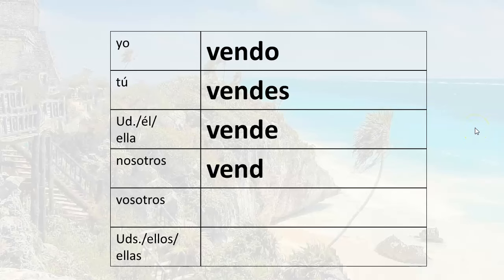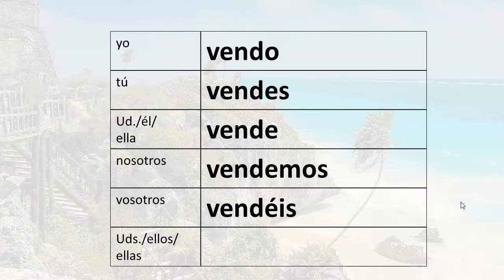We sell or we are selling: nosotros vendemos. You sell or you are selling — this is the vosotros, the informal plural you which is used in Spain: vendéis. Ustedes — remember that UDS is the abbreviation for ustedes — ustedes venden. They sell or they are selling: ellos venden or ellas venden.